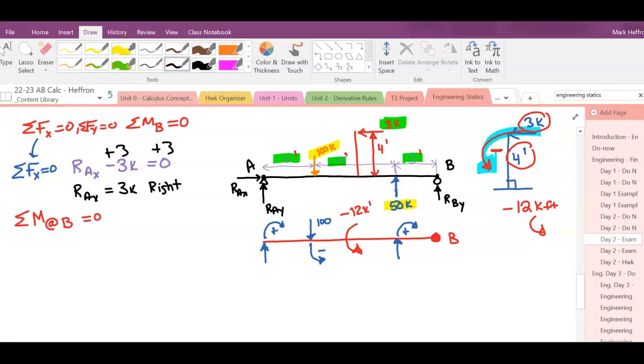So now we'll have an equation that deals with all of this. We've got 50 times 5. We have 12. We have this 100. Its distance is 5 plus 10 or 15 feet. And then this last one, RAy times its distance, 5, 10, 15, 20. And now we'll get all the signs. This is plus. This one's minus. The 12 is minus. And the 50 times 5, let's see, that's 250. That's plus. All equals 0.